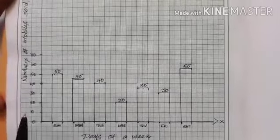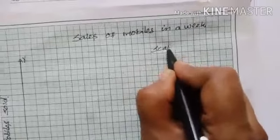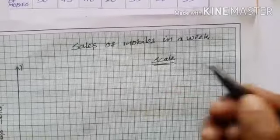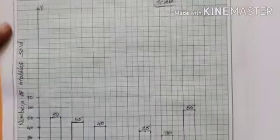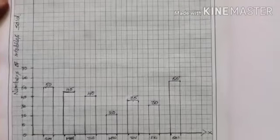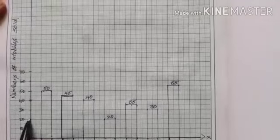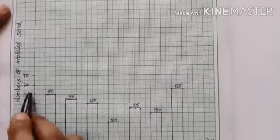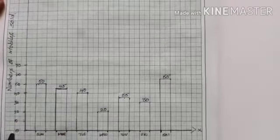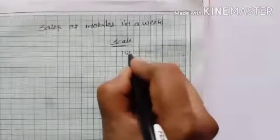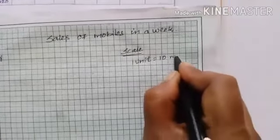One more thing: you have to write the scale from the y-axis. Here, one unit on the y-axis represents 10 mobiles, since we marked the numbers in intervals of 10. So the scale is: one unit is equal to 10 mobiles.